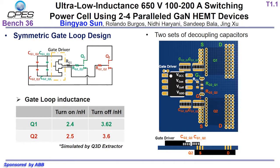This is the gate loop design for the switching cell with two or four parallel GAN devices. Here is one set of decoupling capacitors for each device in the turn-on or turn-off loop. For example, this is the turn-on loop for Q1, and Q2 has a symmetrical loop for turn-on. In this way, the parallel GAN devices have almost the same gate loop inductance. Based on Q3D simulation, the difference in gate loop inductance among the devices is less than 0.1 nH. This enables the use of a small gate resistor to drive the GAN.